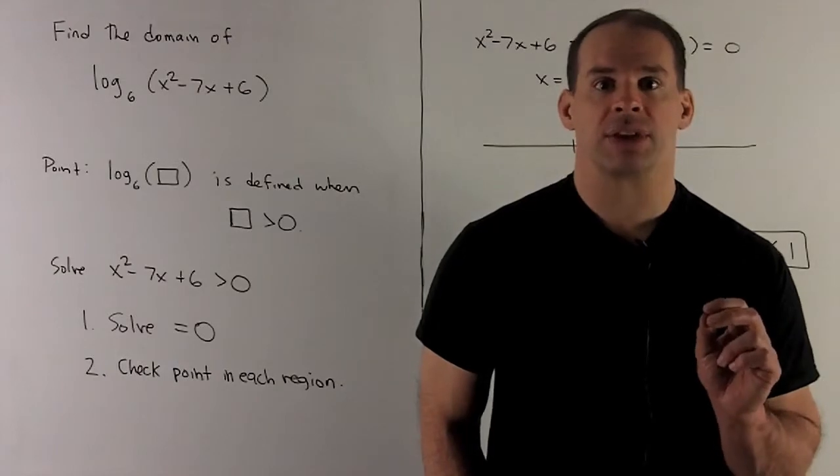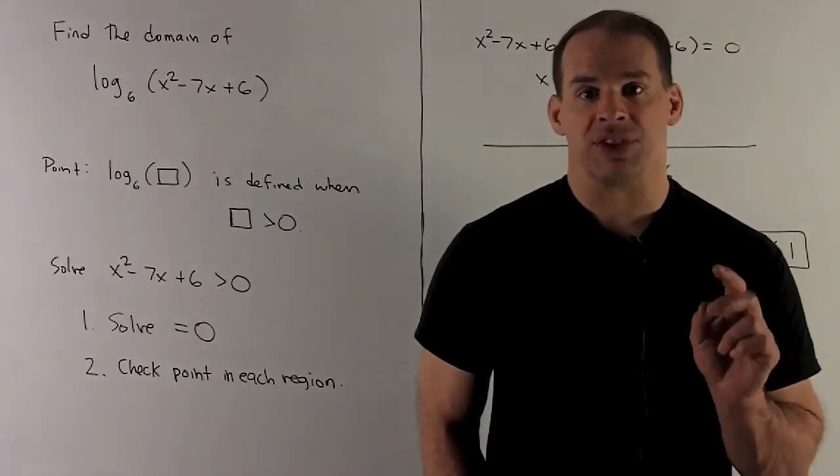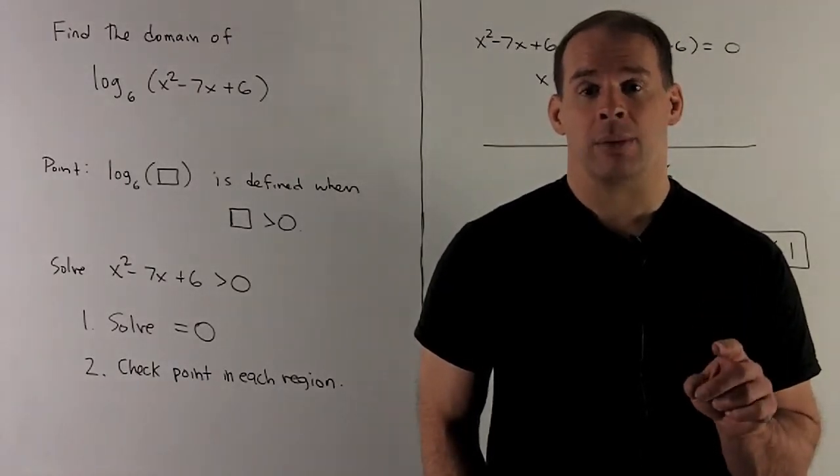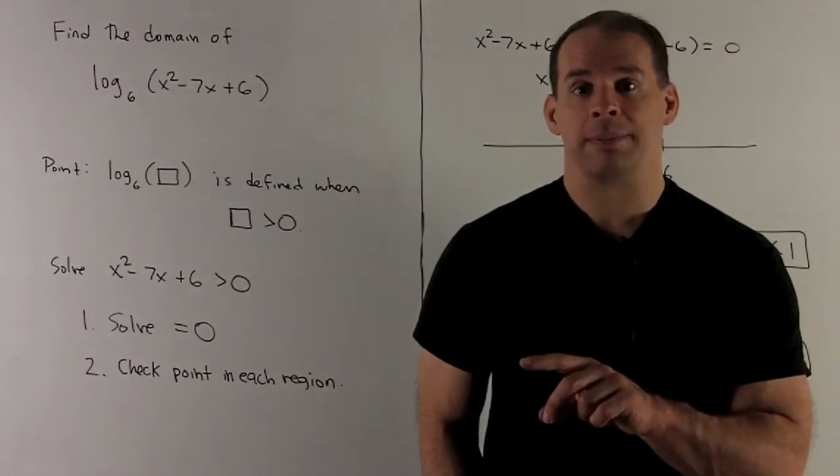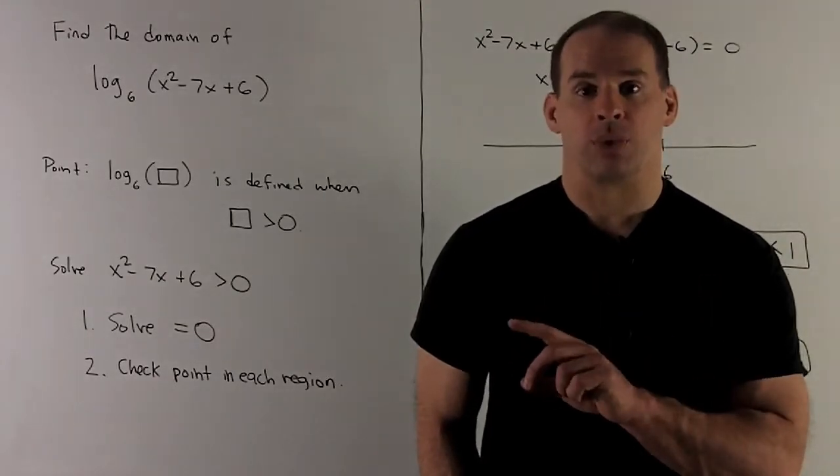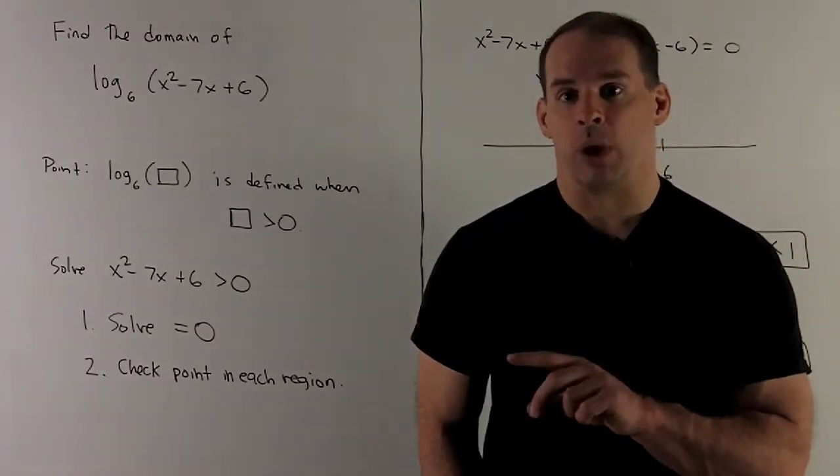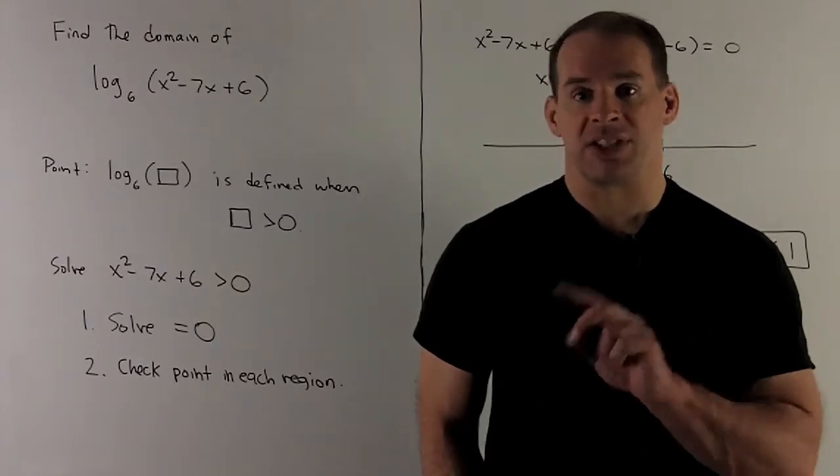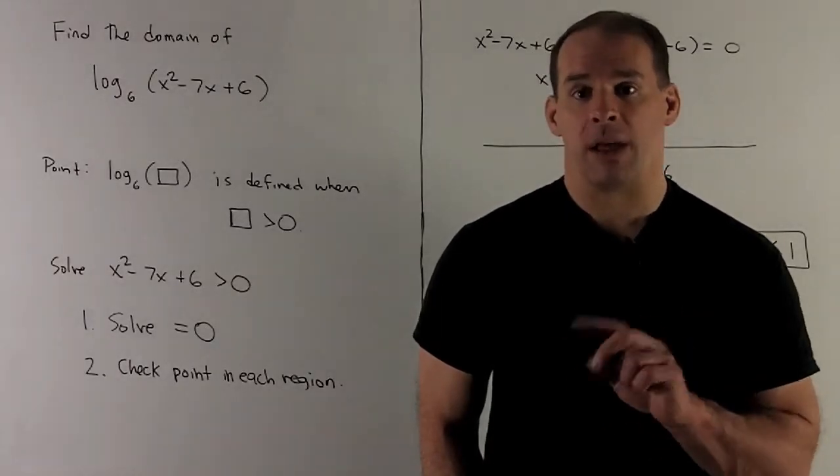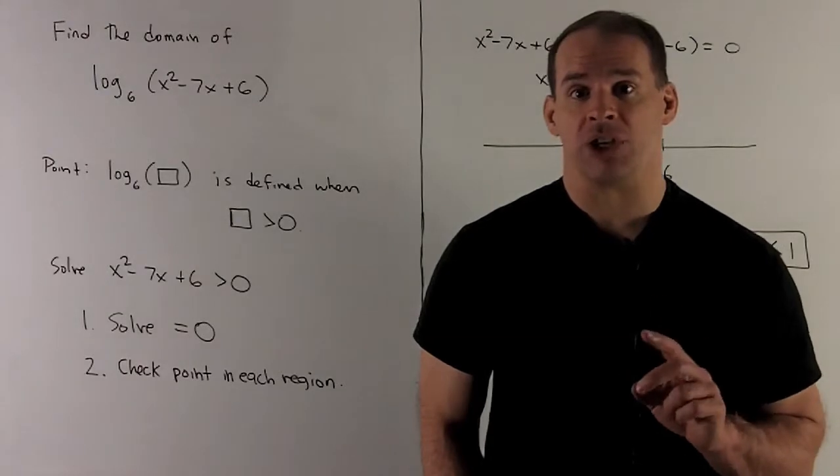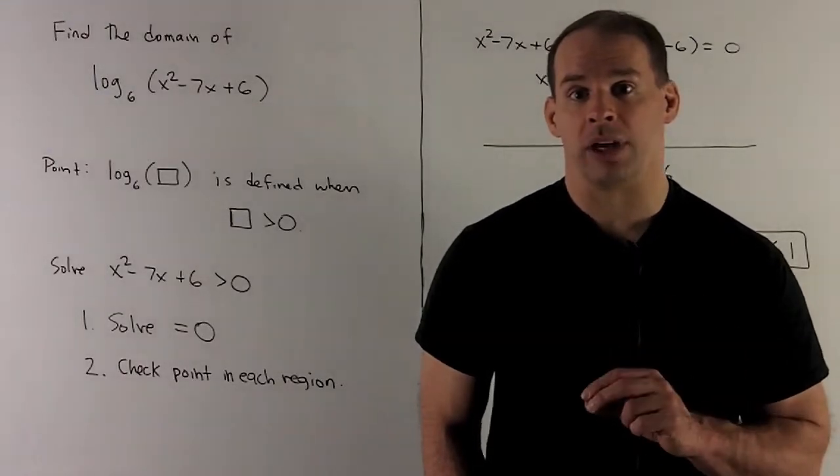So procedure for this: first, we're going to find the zeros. Then I'm going to mark off those points on the real line. It's going to break it up into three regions. I check a point in each region. The sign on each point will tell me what the sign on the entire region is. Then that way, we'll get our domain.